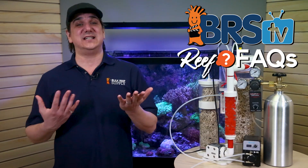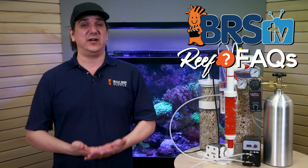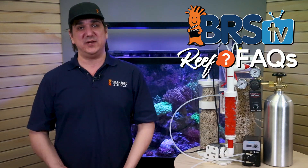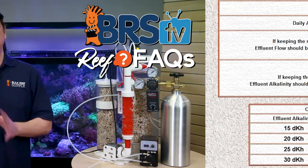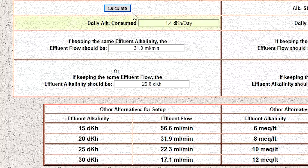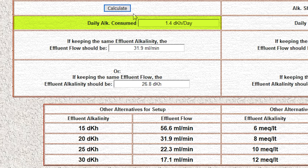This is the super cool part. It spits out very precise recommendations based on your two-part dose. First, it tells you that your tank and corals are consuming 1.4 dKH a day, and that's what you need to replace with the calcium reactor — which is nice to know.